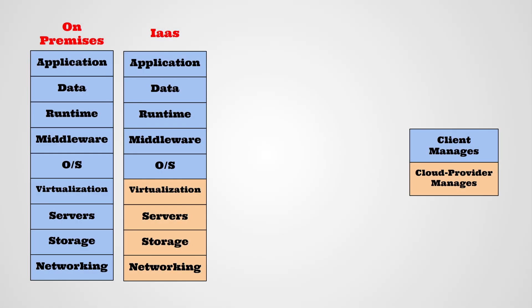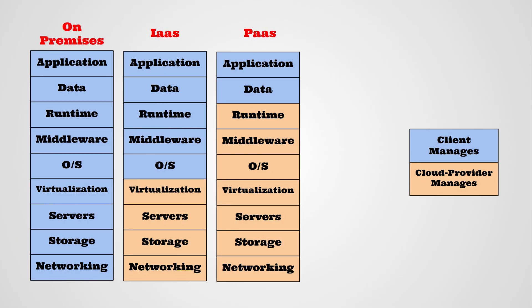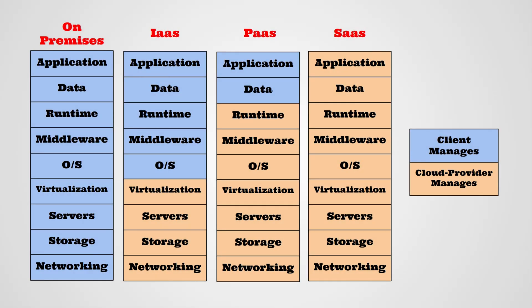Infrastructure as a Service allows the cloud provider to manage the virtualization, servers, storage, and networking. This takes some workload off the organization, but they would still have to manage the application, data, runtime, middleware, and operating system. In Platform as a Service, the client only manages the application and data, while everything else is managed by the cloud provider. Lastly, with Software as a Service, you could outsource everything from the application all the way down to the networking, allowing organizations to focus more on other business priorities.